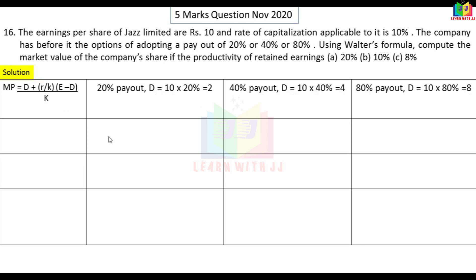Using Walter model formula: Market Price = [D + (R/K)(E - D)] / K, where R is rate of return, K is cost of capital, E is EPS, D is dividend. We apply three values of R — 20%, 10%, and 8% — combined with three payout ratios of 20%, 40%, and 80%.